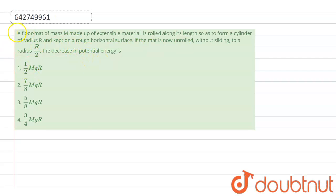In this question it says that a floor mat of mass capital M made up of extensible material is rolled along its length so as to form a cylinder of radius R and kept on a rough horizontal surface. If the mat is unrolled without any sliding to a radius of R by 2, then the decrease in the potential energy is...